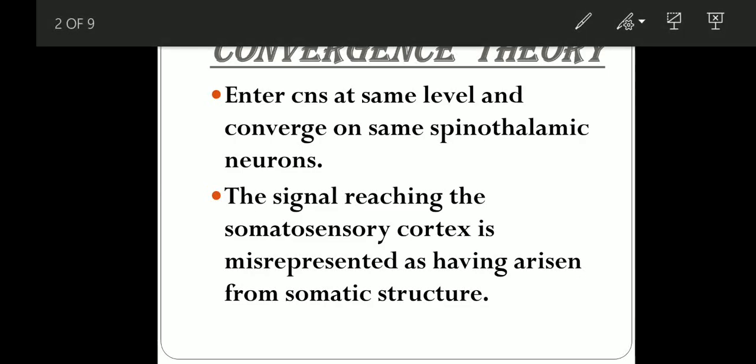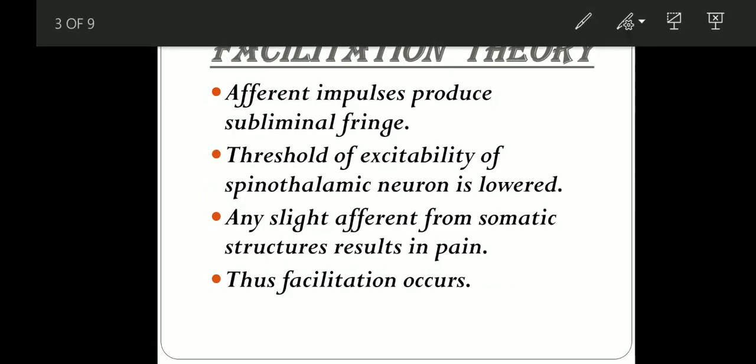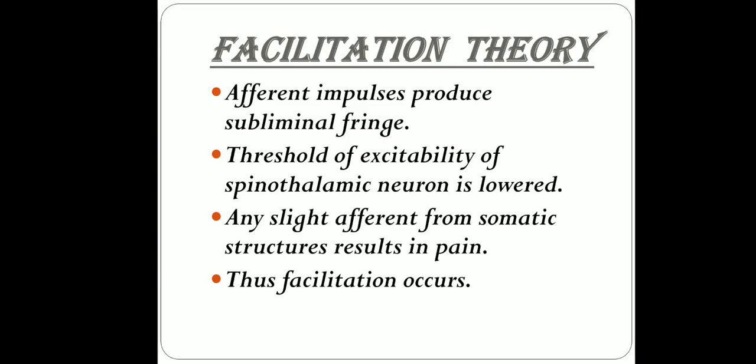The next theory is facilitation theory. In case of the facilitation theory, the afferent impulses from the visceral structure produce subliminal fringe. As a result, the threshold of excitability of spinothalamic neurons is decreased. Therefore, any slight afferent from the somatic structure succeeds in generating action potential within the spinothalamic neurons, and pain is felt. Thus, facilitation occurs.